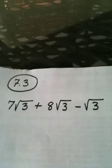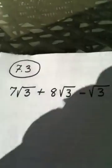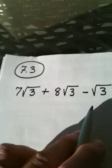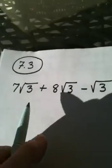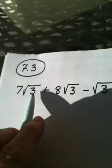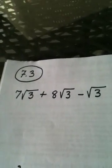What we're doing in section 7.3 is we are adding and subtracting radicals. And in order to do that, the radicals need to be identical. So the square root of 3, the square root of 3, the square root of 3 are considered like terms.